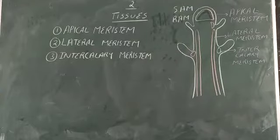Stem and roots have cells derived from the primary meristem that have differentiated into permanent tissue. These meristematic tissues divide further and form the permanent tissue.